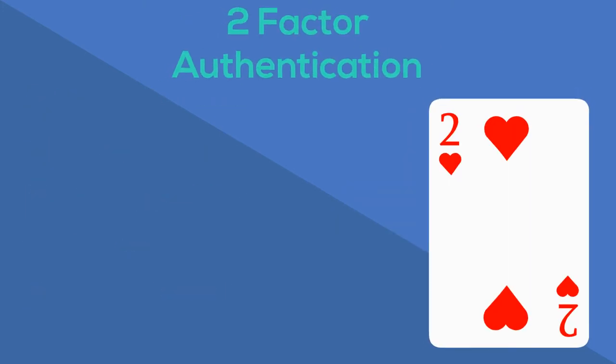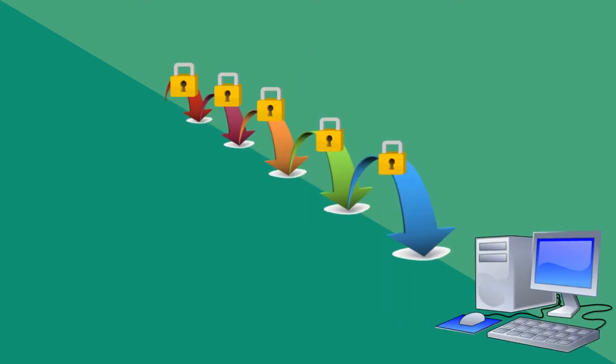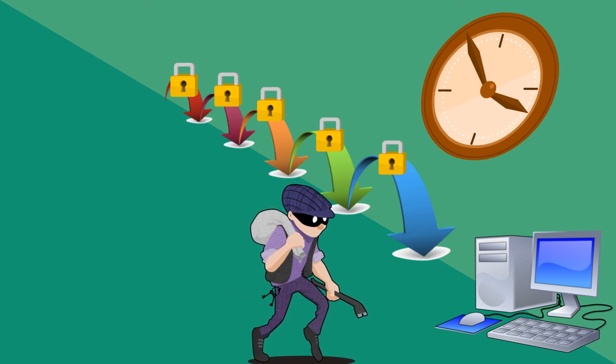Two-factor authentication requires another step, like entering a code sent to your phone after typing your username and password. These techniques aren't completely unstoppable, but every security step slows down threats, giving you more time to stop malicious behavior.